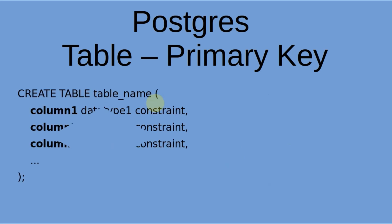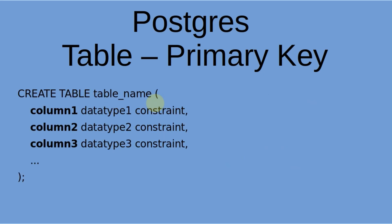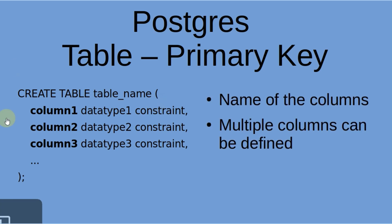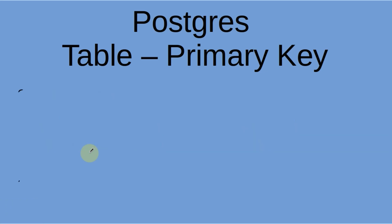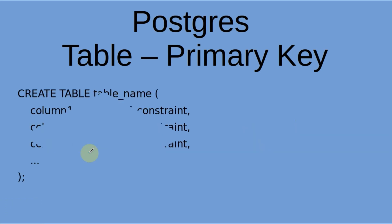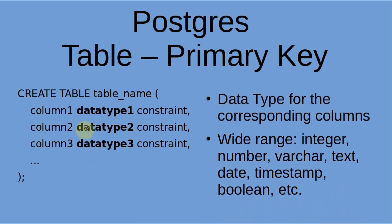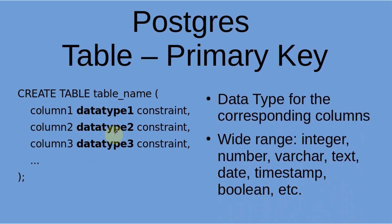The next step is to identify your columns and name them appropriately. You can have multiple columns as you define them as well. The next part is the data types, which match one-to-one for each column.